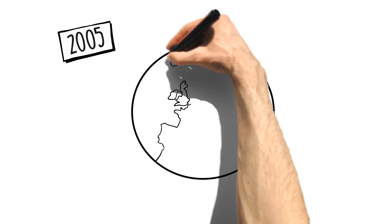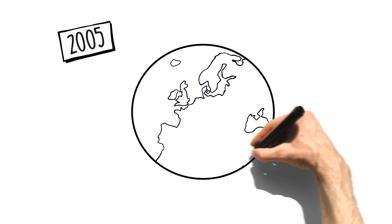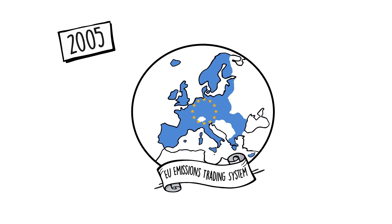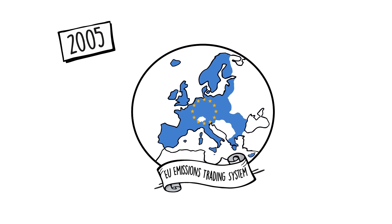In 2005, to limit the emission of greenhouse gases, the European Union decided to introduce the first multi-state carbon market. In 2015, this has become the largest emissions trading scheme in the world. How does the European carbon market work?